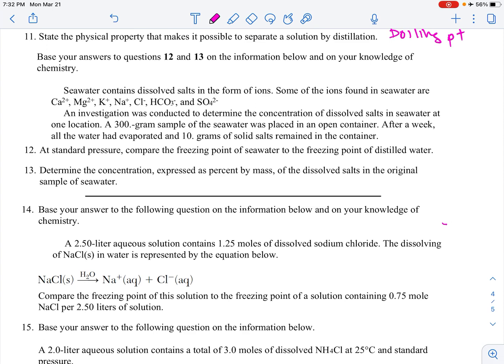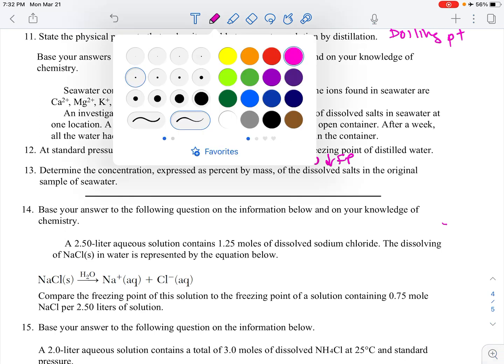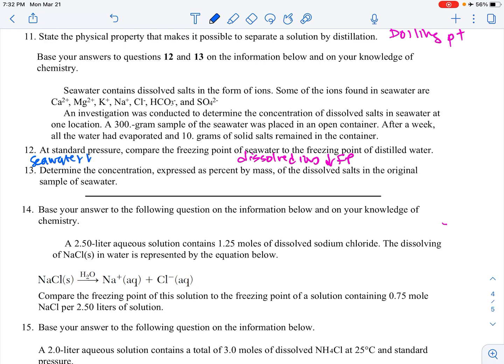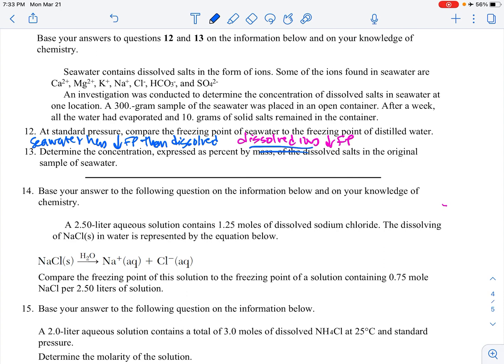All right. Here we go. Seawater contains dissolved salts in the form of ions. Some of the ions found in seawater are listed. An investigation was conducted to determine the concentration of dissolved salts in seawater at one location. A 300 gram sample of the seawater is placed in an open container after a week. All the water had evaporated. 10 grams of solid salt remains in the container. At standard pressure, compare the freezing point of seawater to the freezing point of distilled water. So seawater has dissolved ions. So if you have dissolved ions, you're going to have a lower freezing point. And you're also going to have a higher boiling point. But that's not what the question is. So we're going to say, if you want to answer the question, we're going to say seawater has a lower freezing point than distilled. Don't write a whole story about it. The truth is, because there are more dissolved ions, it would have a lower freezing point. But it doesn't say to explain why. It just says compare them. So you could also say that distilled water has a higher freezing point.